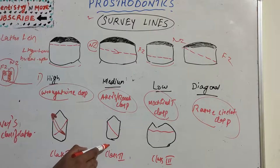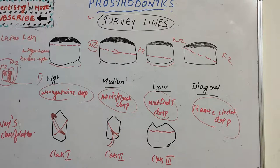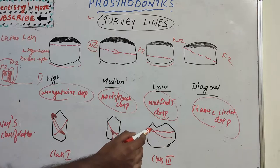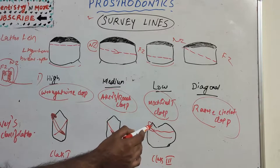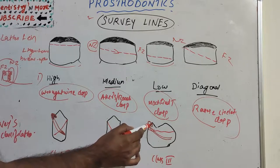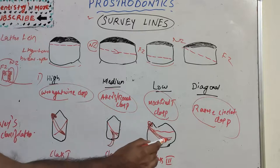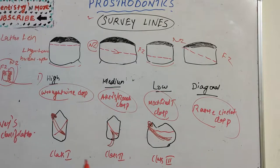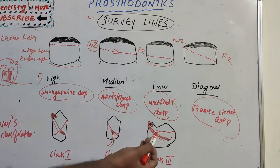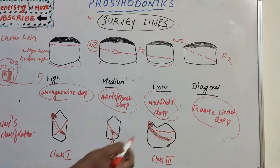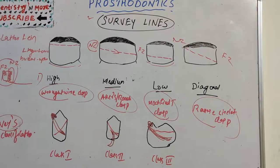In Class 3, the survey line is parallel to the occlusal surface and lies just below it. This is another classification of survey lines given by Nee. So these are the two main classifications for survey lines — Blatterfinn's and Nee's.